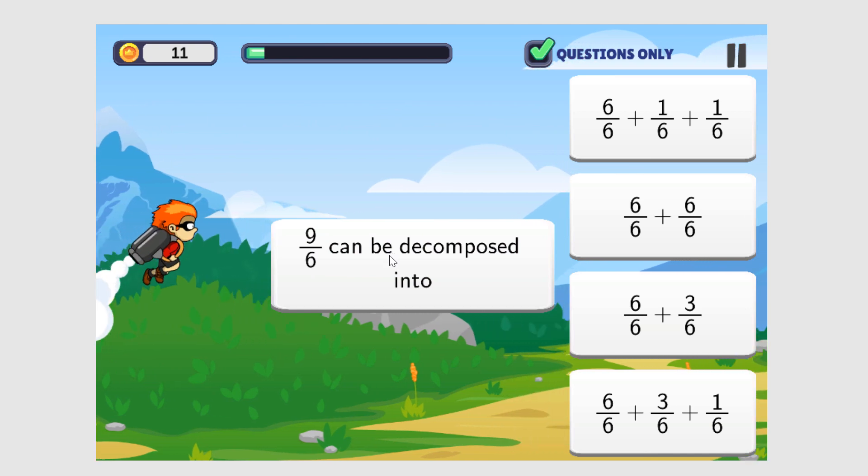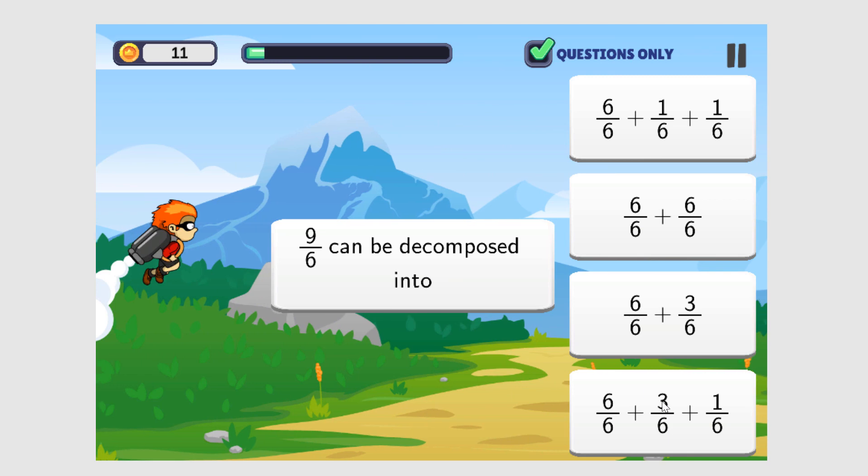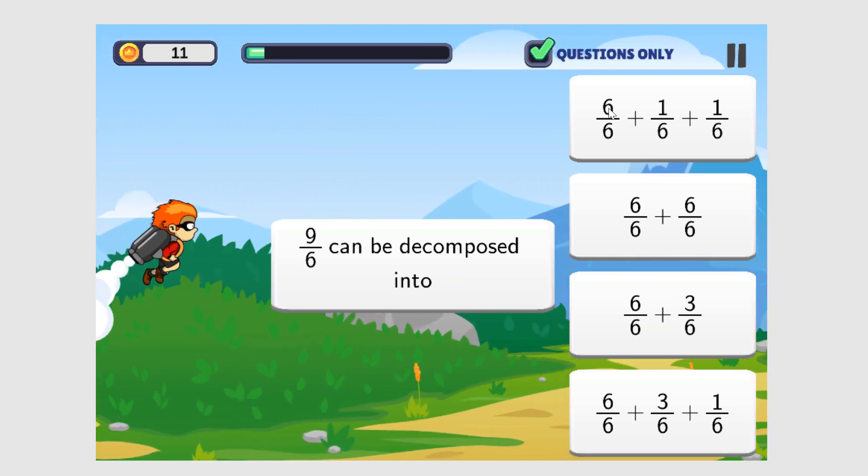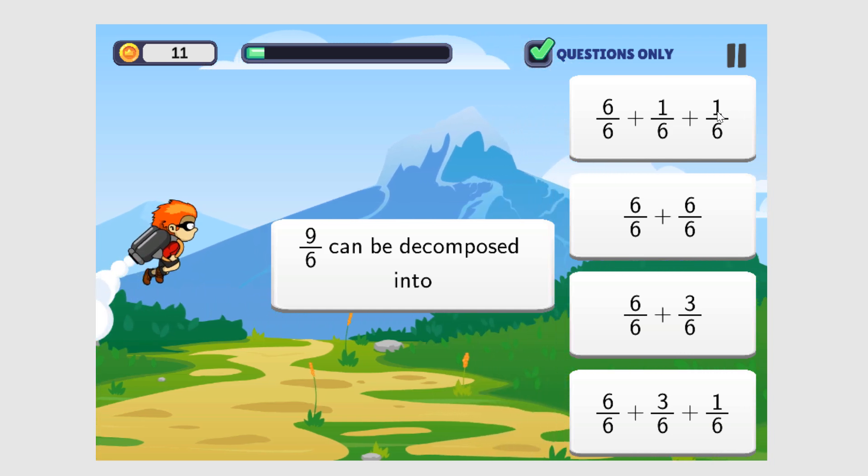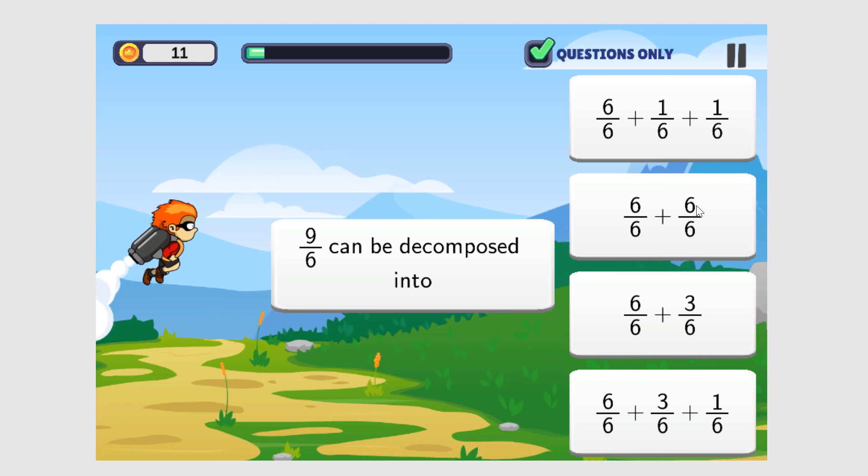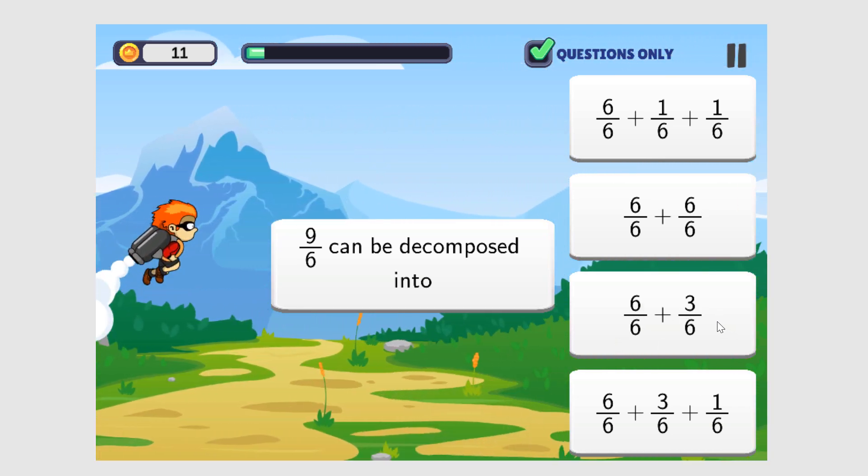Nine-sixths can be decomposed into... Again, let's go through the answers and find out which one is equal to nine-sixths. We have six plus one plus one is eight over six. That's not right. Six plus six is twelve, that's not it. Six plus three is nine, nine over six. That's the answer.